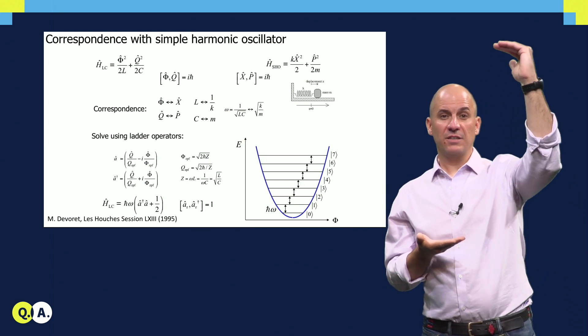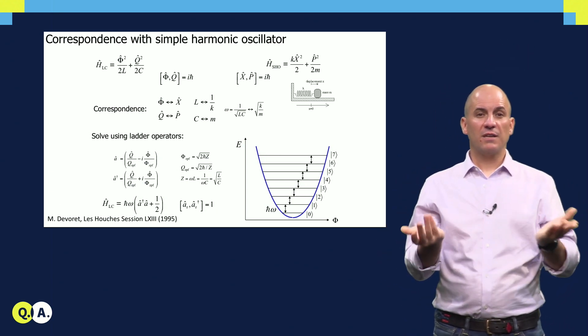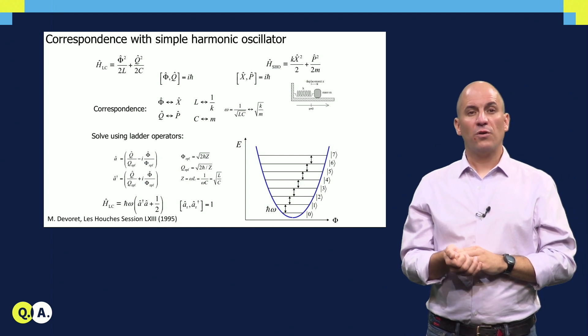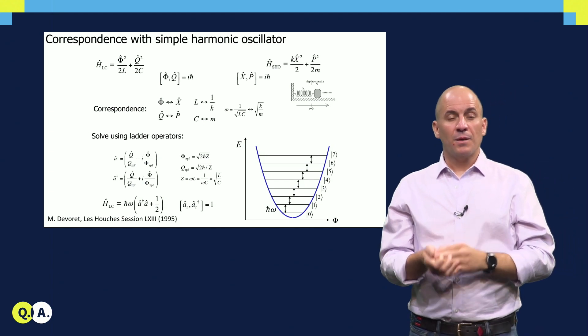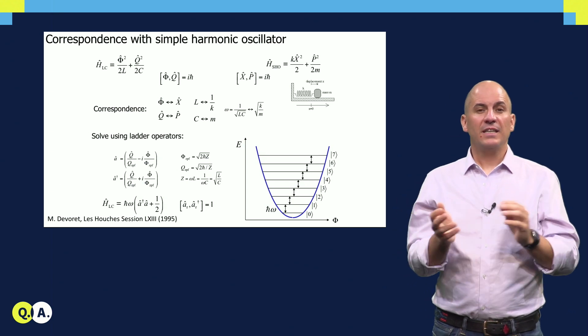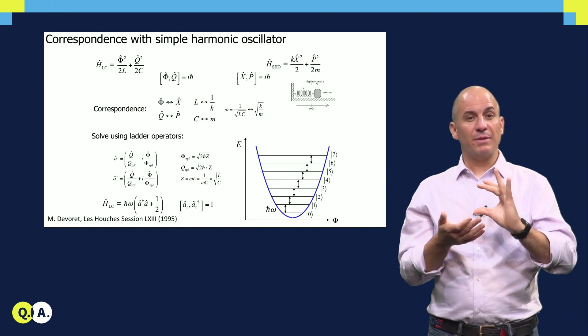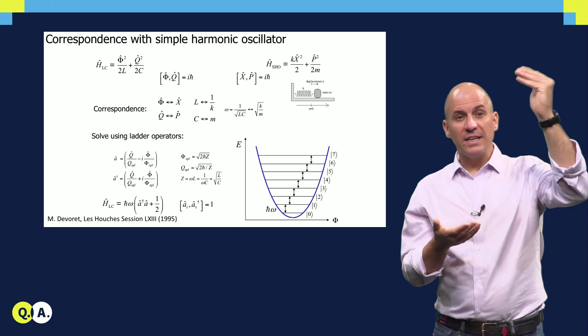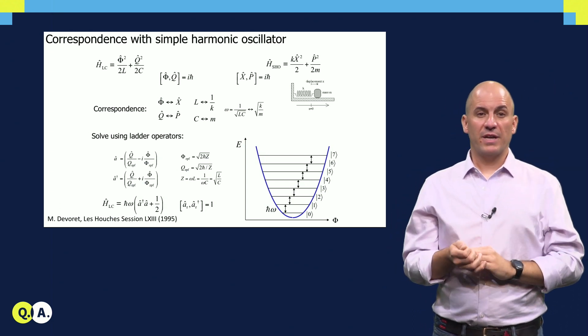Physics students will thus not be surprised to learn that the spectrum of the quantized LC oscillator is perfectly harmonic. Levels are equally spaced in energy. This equal spacing is given by a familiar formula, one over root LC. But unfortunately, a harmonic spectrum does not a good qubit make. It is very difficult to confine the dynamics to just two levels, so leakage out of the qubit subspace is a permanent threat.